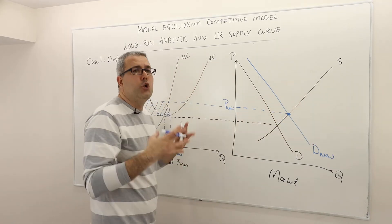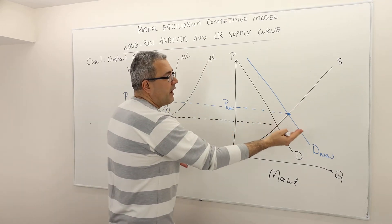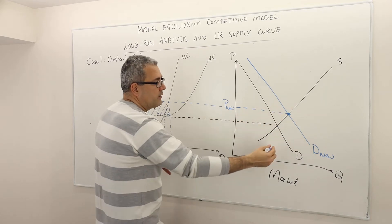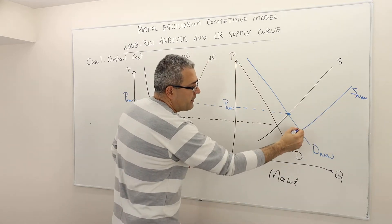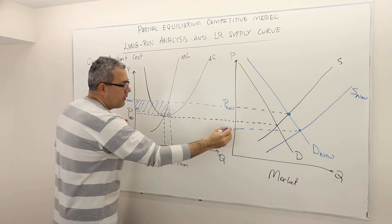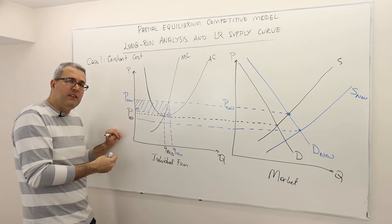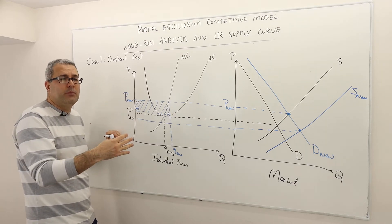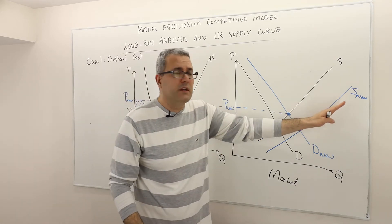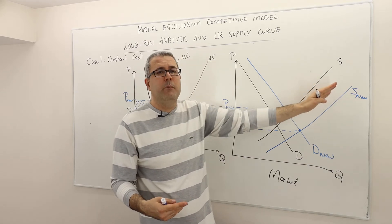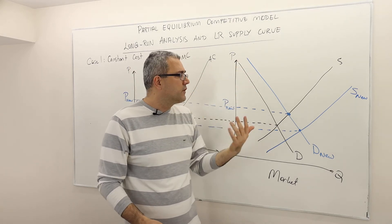It may shift too much because too many new firms enter the market. If it shifts too much, meaning under the new supply curve the price falls below the old price, the individual firm is going to suffer a loss — negative profit — so some firms will exit. This is a perfectly competitive market with free entry and free exit. When some firms exit, the supply curve shifts back. So the supply will shift back and forth, but eventually in the long run it's going to become stable.